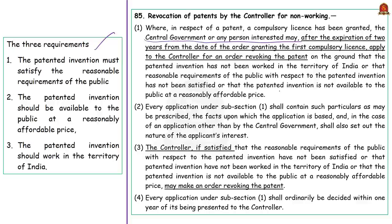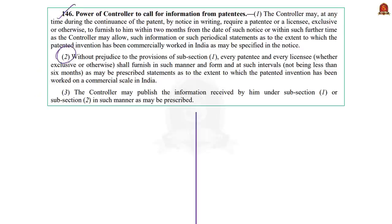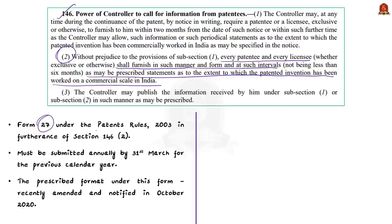Now let us see one more important requirement under the law — Section 146(2). Under this provision, every patentee and every licensee shall furnish details about the extent to which the patented invention has been worked on a commercial scale in India, in such manner, form, and at such intervals as prescribed. For this purpose, a form called Form 27 is given effect by the Patents Rules of 2003. Every patentee or licensee is required to furnish information relating to working of the patent and a statement about the extent to which the patented invention has been worked. This form must be submitted annually by 31st March for the previous calendar year.